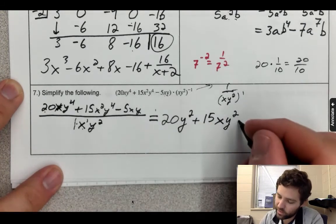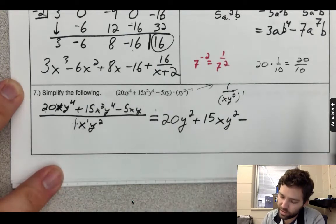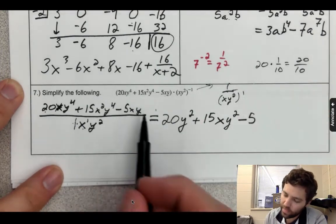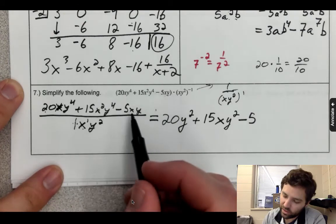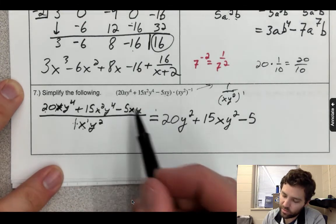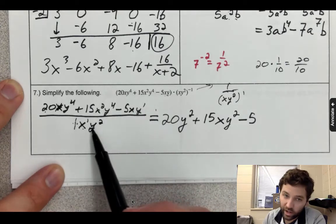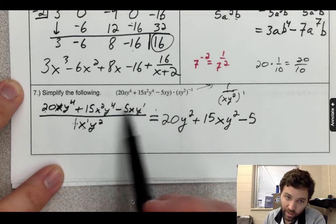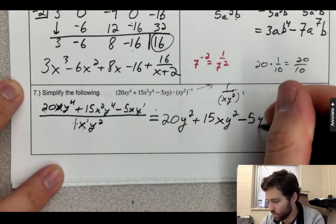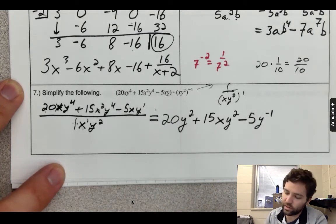And then over here I have minus 5 over 1, so that's just 5. x over x, again those cancel out. And then I've got y to the 1 divided by y², that's going to be 1 minus 2, so y⁻¹ as your answer.